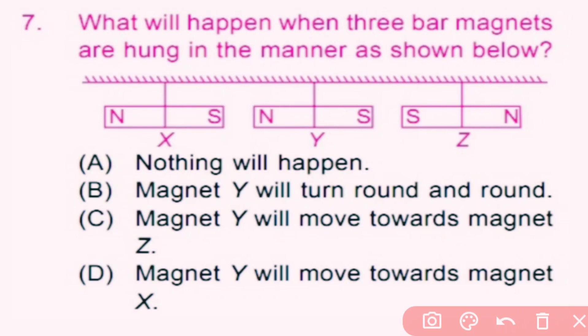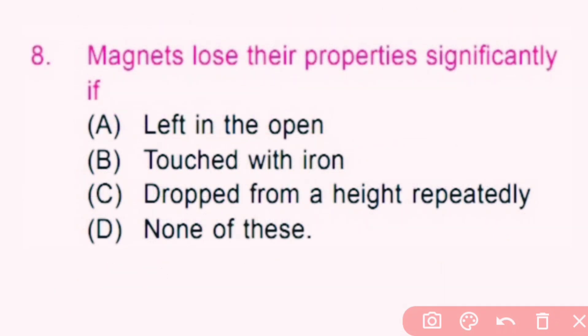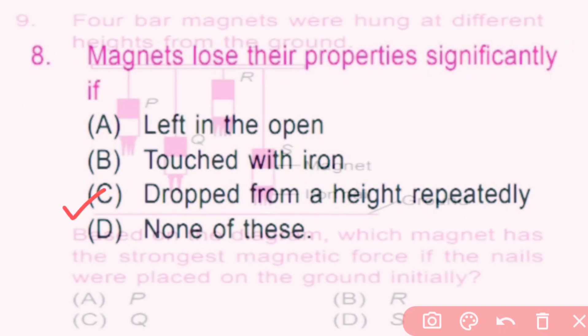Question number 8. Magnets lose their properties significantly if... Magnets lose their property if they are heated, hammered, or dropped from some height. So here, C is the correct answer.